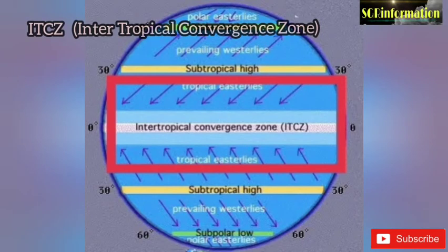ITCZ — Intertropical Convergence Zone — is the zone where the trade winds of the northern hemisphere and southern hemisphere come together.